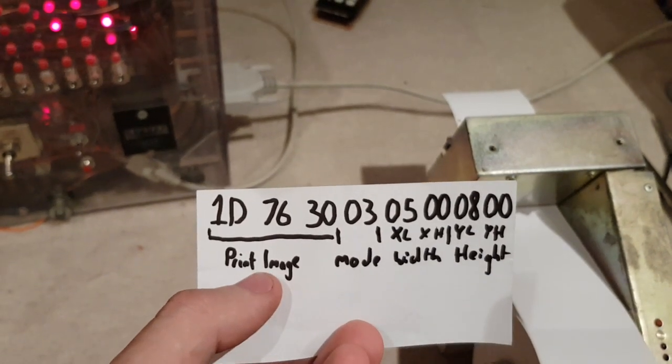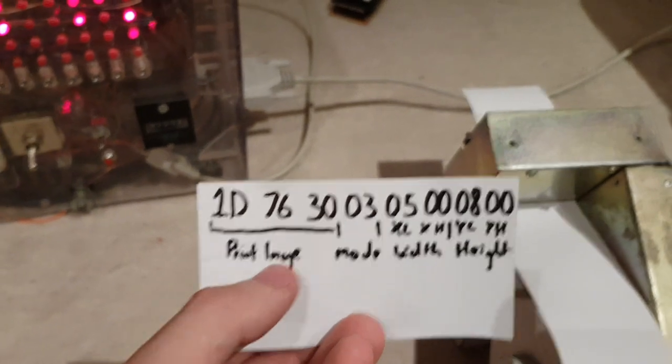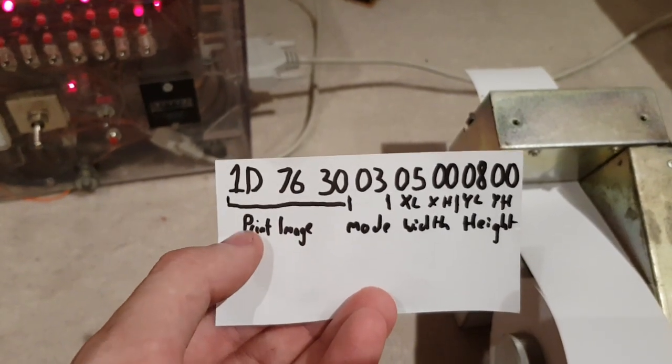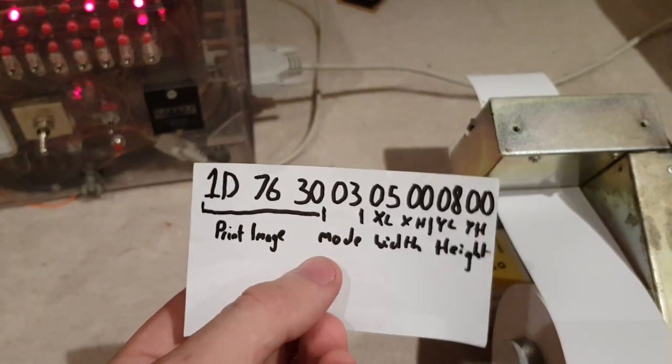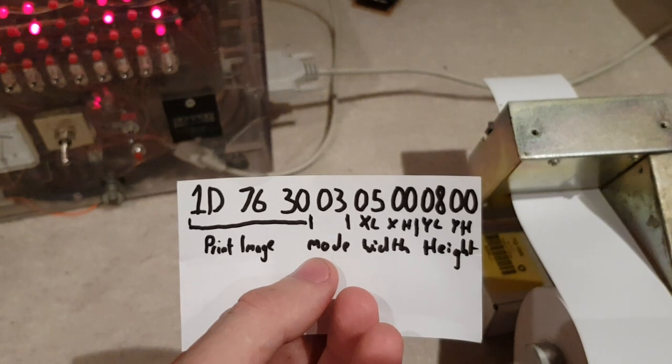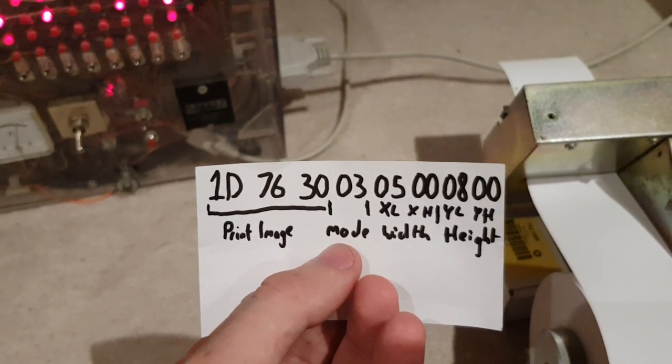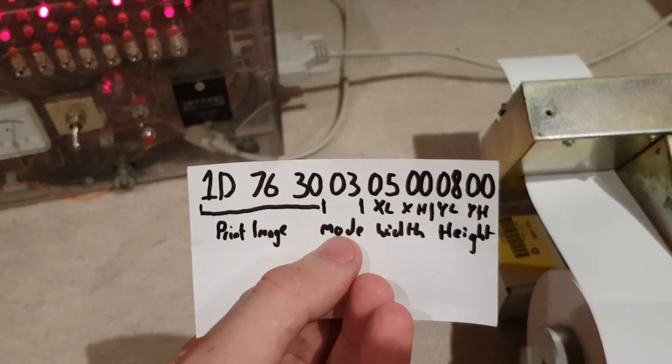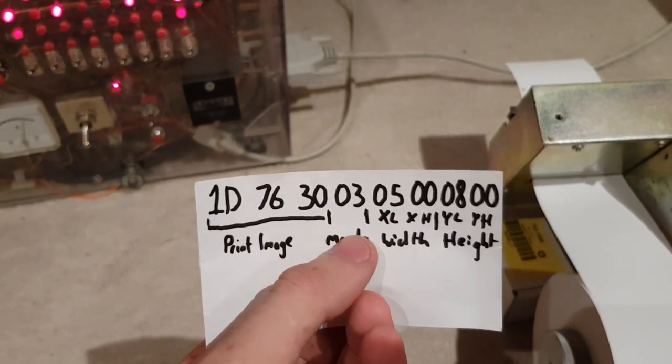So you send a command to tell it you want to print an image, which in this case is hex 1D 76 30, and then you set the mode. This sets the dots per inch to either 202 dots per inch or 101 dots per inch. So we've set it to 101 dots per inch, which is 03.